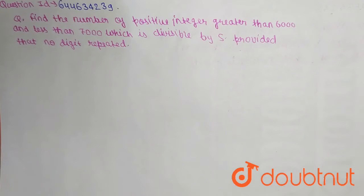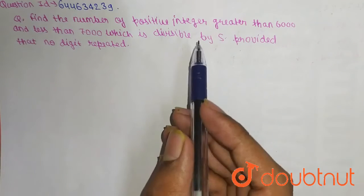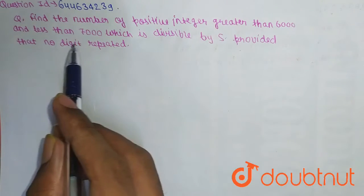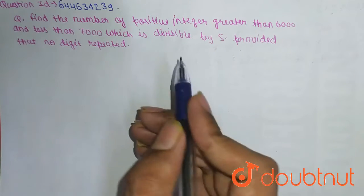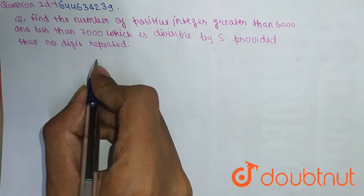of PnC, permutation and combination. The question says: Find the number of 4-digit integers greater than 6000 but less than 7000 which is divisible by 5, provided that no digits are repeated. So for this, let's start the question.